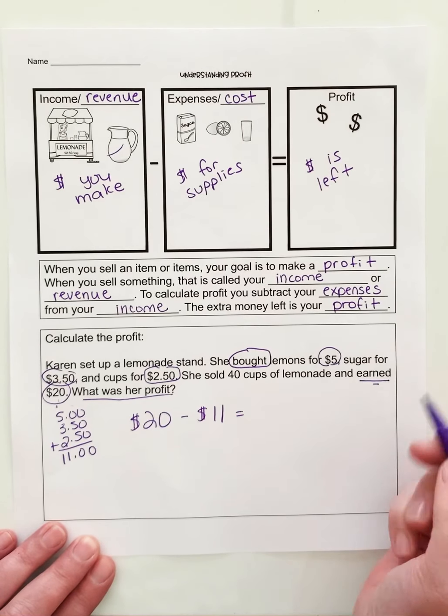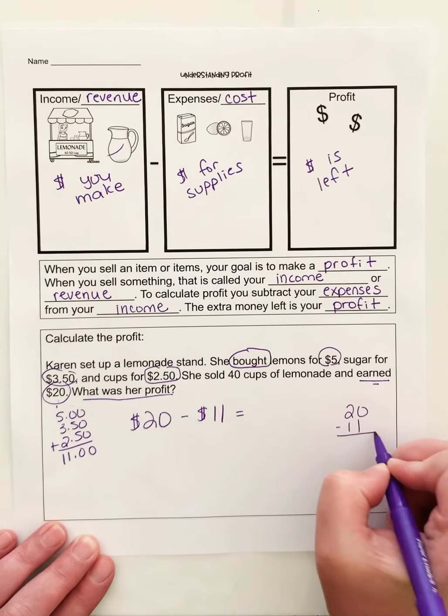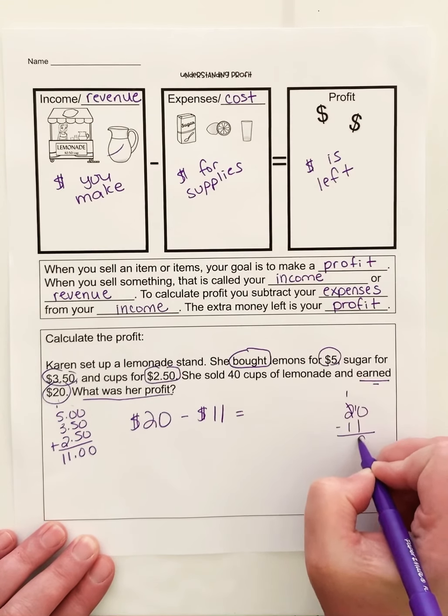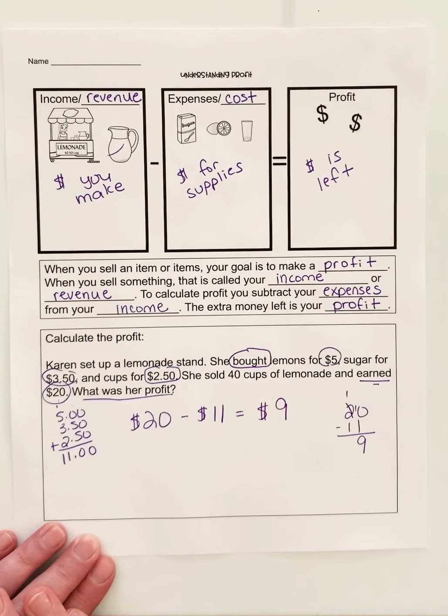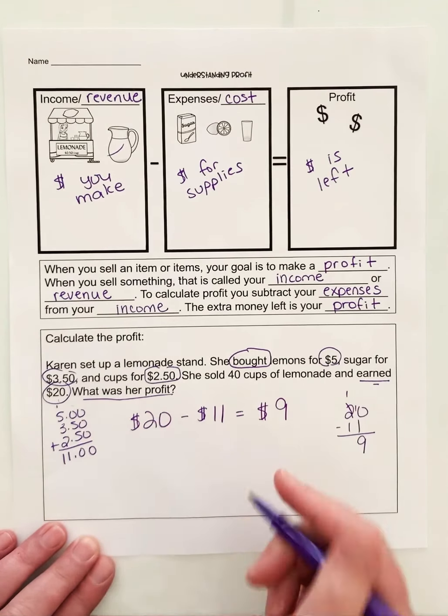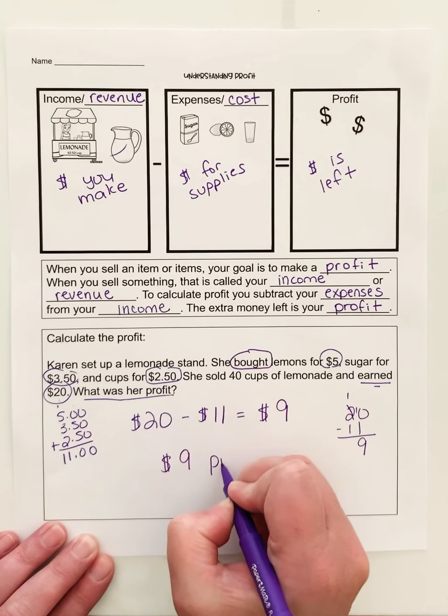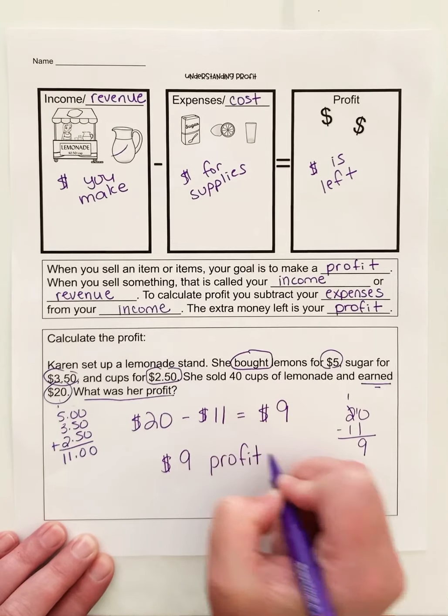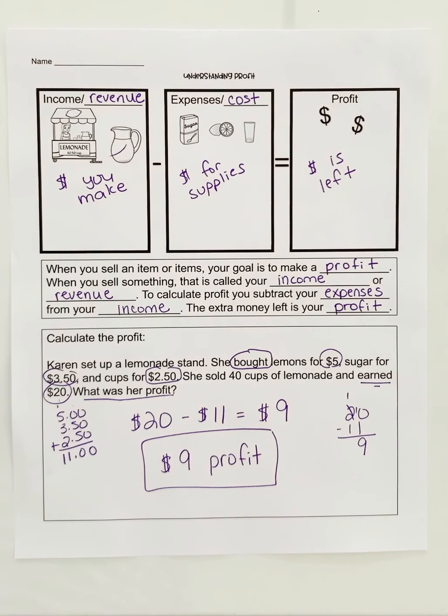So what is $20 minus $11? $9. So all together, her profit was $9.